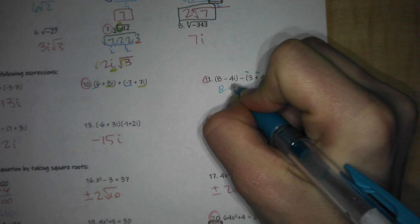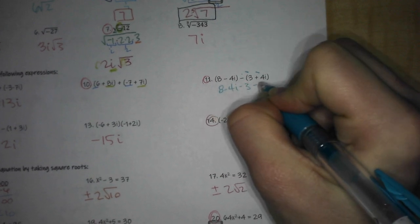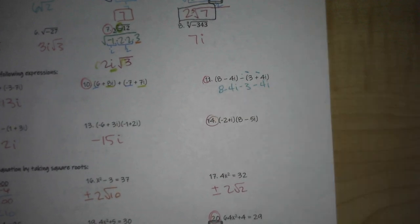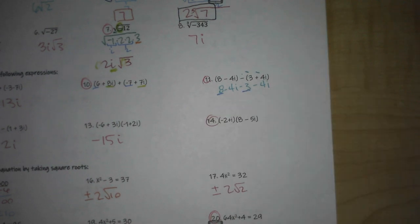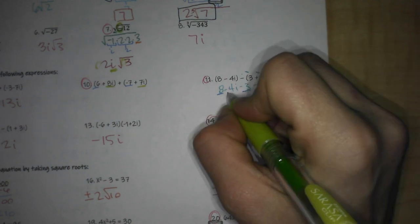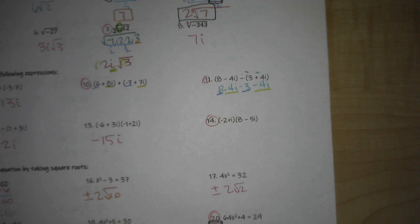So really here you have 8 minus 4i minus 3 minus 4i, and then you can combine like terms. You've got your numbers 8 and minus 3, and you have your i's minus 4 minus 4.